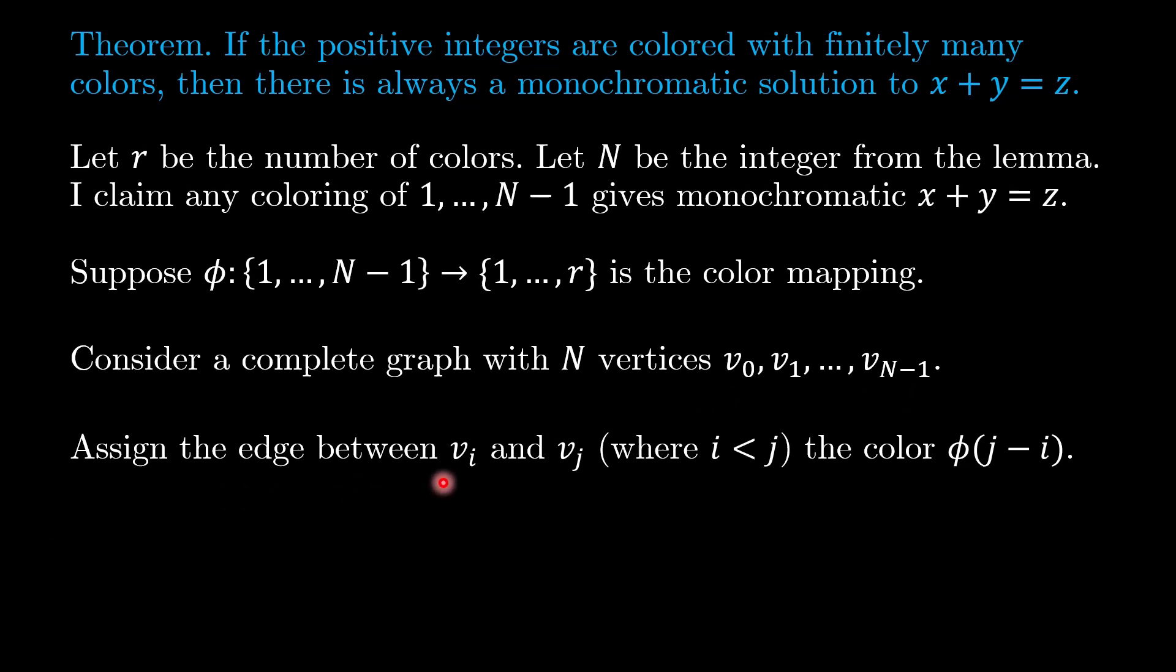Well, for the edge between v_i and v_j, where i is less than j, I'll assign the color that is corresponding to the integer j minus i. So we can check that j minus i will always be from 1 to N minus 1. So the color of the edge is well defined.